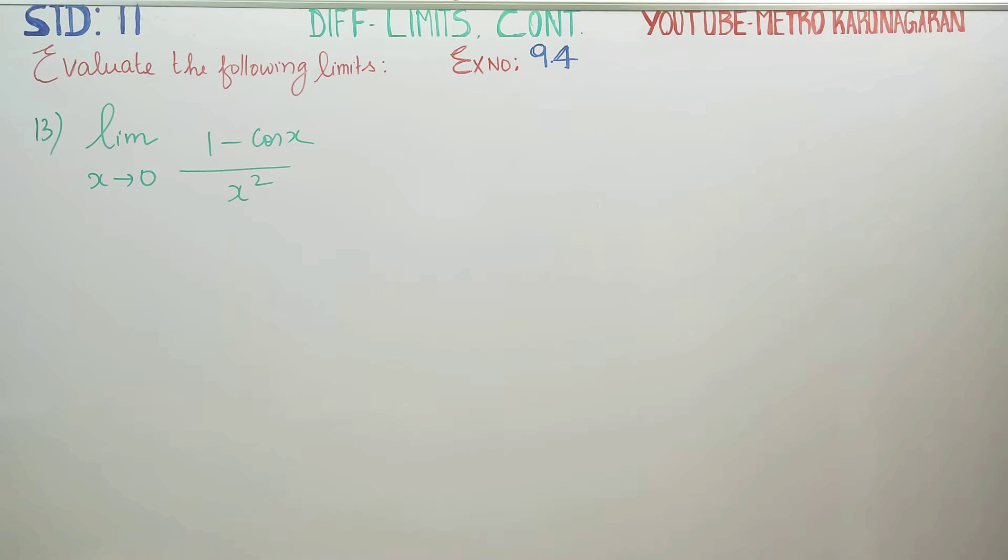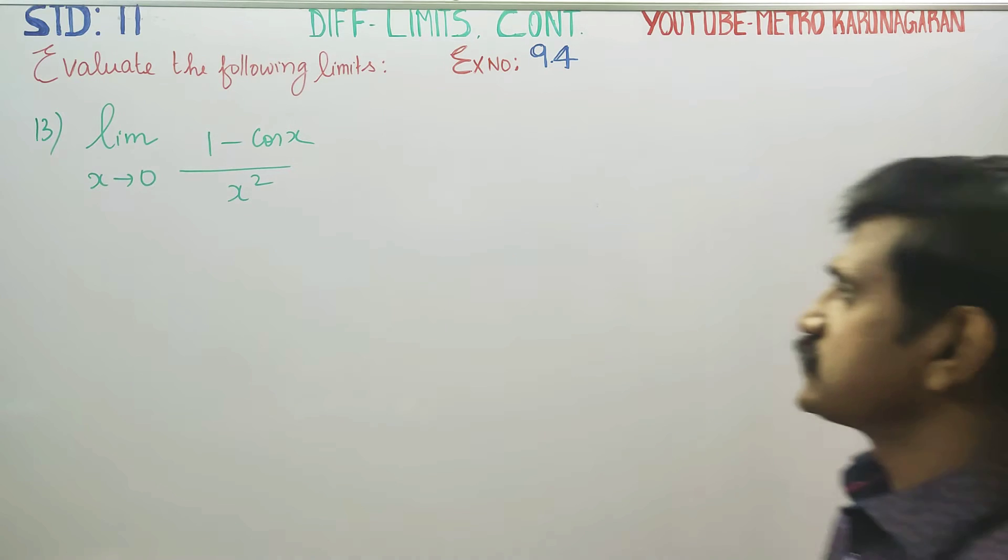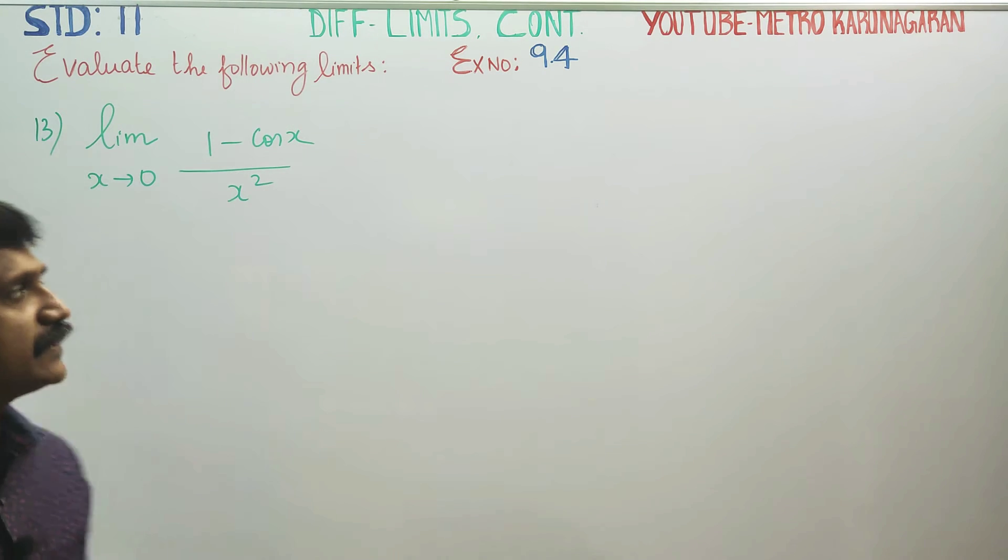Dear 11th standard students, in exercise number 9.4, sum number 13, limit x turns to 0, (1 minus cos x) by x square.